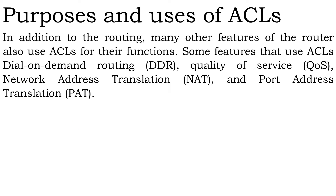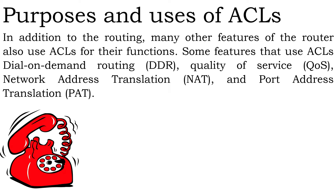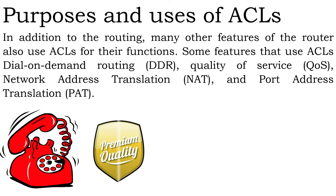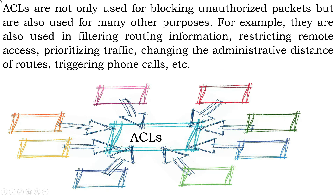Purposes and uses of ACLs. In addition to routing, many other features of a router also use ACLs for their functions. Some features that use ACLs are dial-on-demand routing (DDR), quality of service (QoS), network address translation (NAT), and port address translation (PAT). ACLs are not only used for blocking unauthorized packets but are also used for many other purposes, such as filtering routing information, restricting remote access, prioritizing traffic, changing the administrative distance of routes, and triggering phone calls, etc.